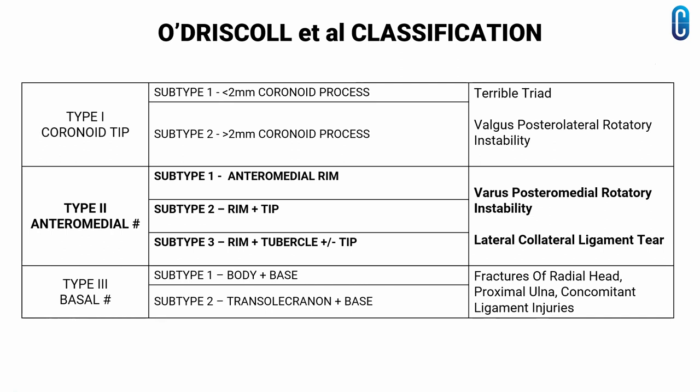Type 2 is anteromedial facet fracture. It is divided into 3 subtypes: subtype 1 — only anteromedial rim is involved; subtype 2 — involving anteromedial rim and tip of the coronoid; subtype 3 — including the rim and sublime tubercle, with or without involving the tip. This type of fracture is mostly associated with varus posteromedial rotatory instability, which is almost always associated with a lateral collateral ligament tear.